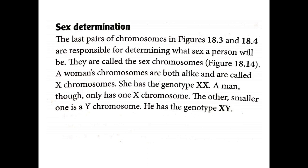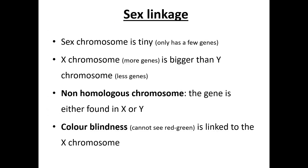For sex determination, females have XX chromosomes and males have XY chromosomes. The X chromosome is larger and contains more genes than the Y chromosome, which has fewer genes. For sex-linked traits like colour blindness — the inability to see red and green — the gene is linked to the X chromosome. Females can be carriers of colour blindness, while males either have it or they don't.